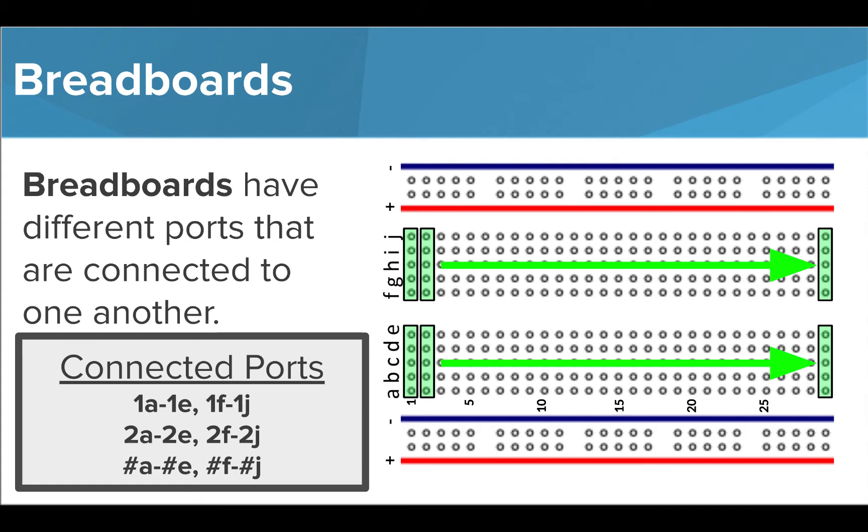This exists for all the ports in our center grid, so any number port in the a column is connected to that same number in the b, c, d, and e columns. And any port in the f column is connected to that number port in the g, h, i, and j columns.